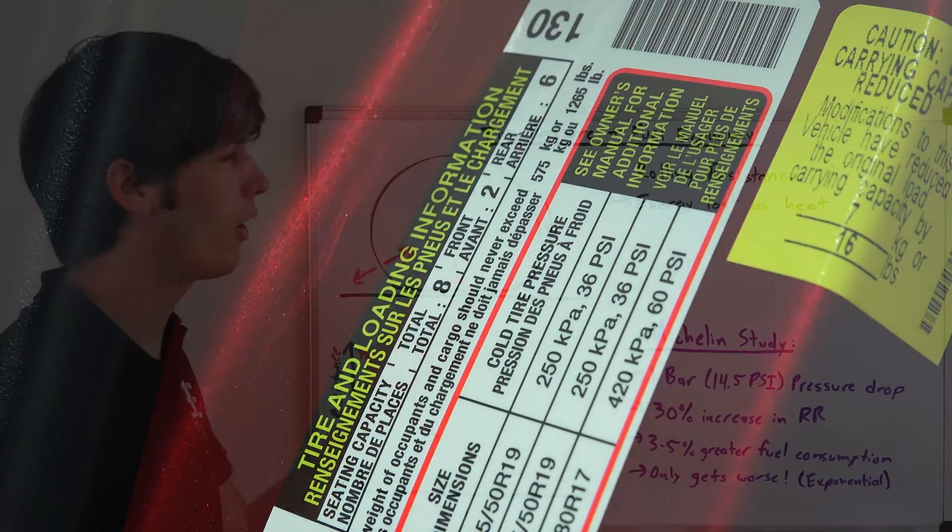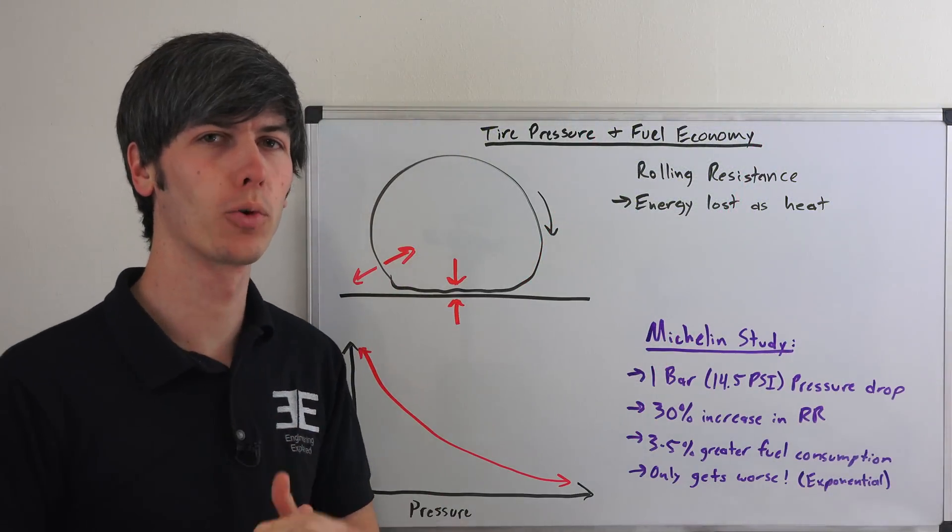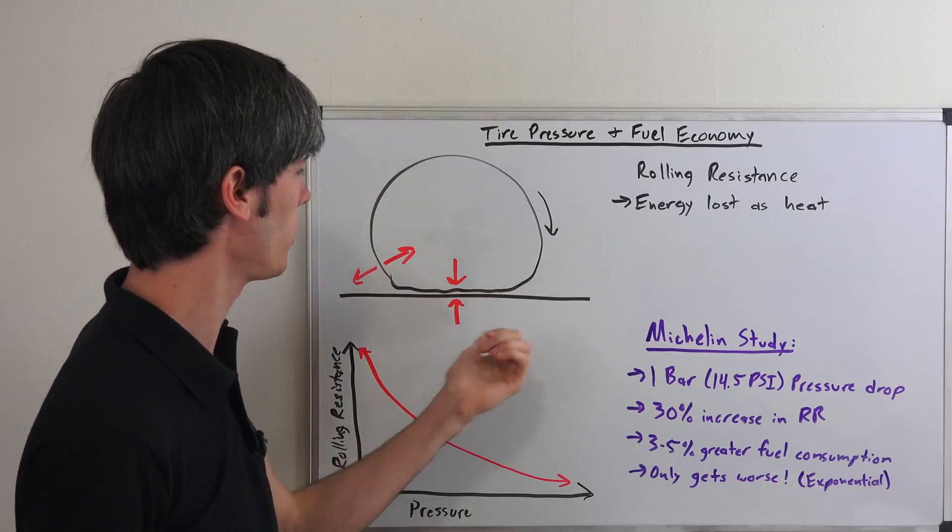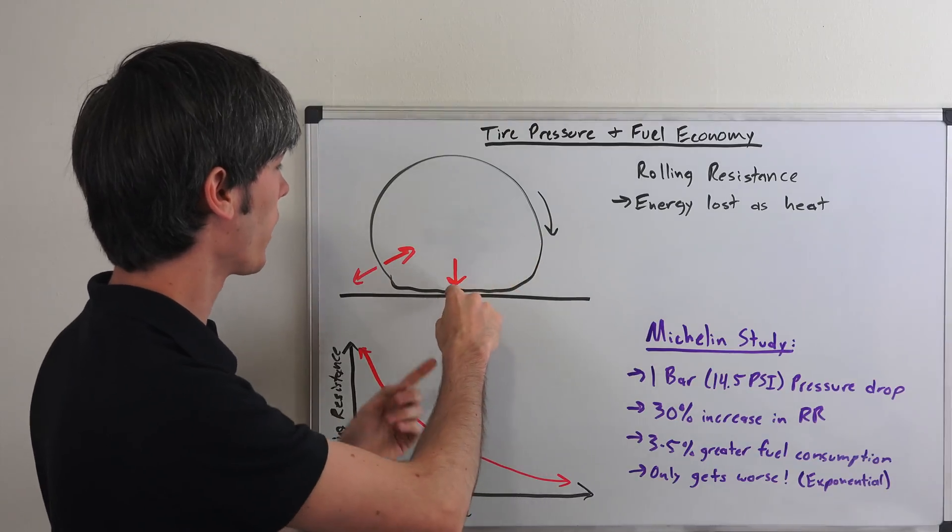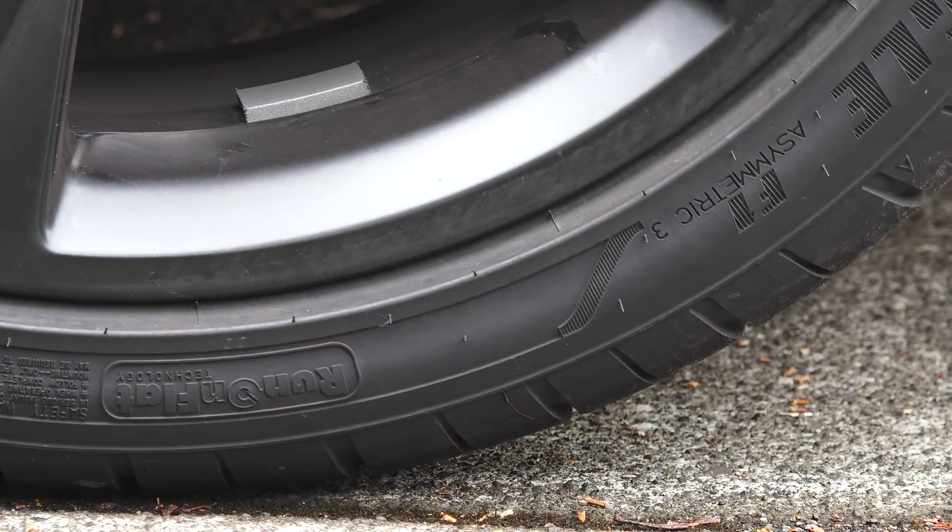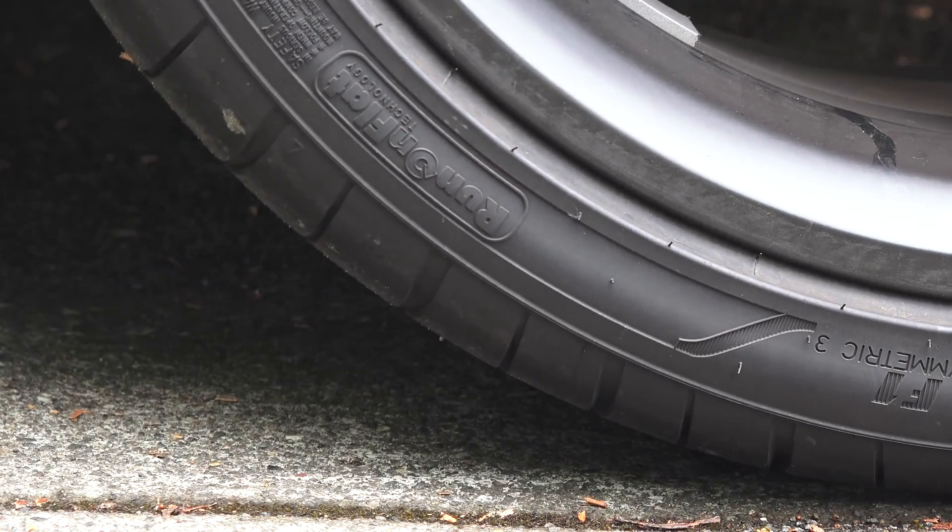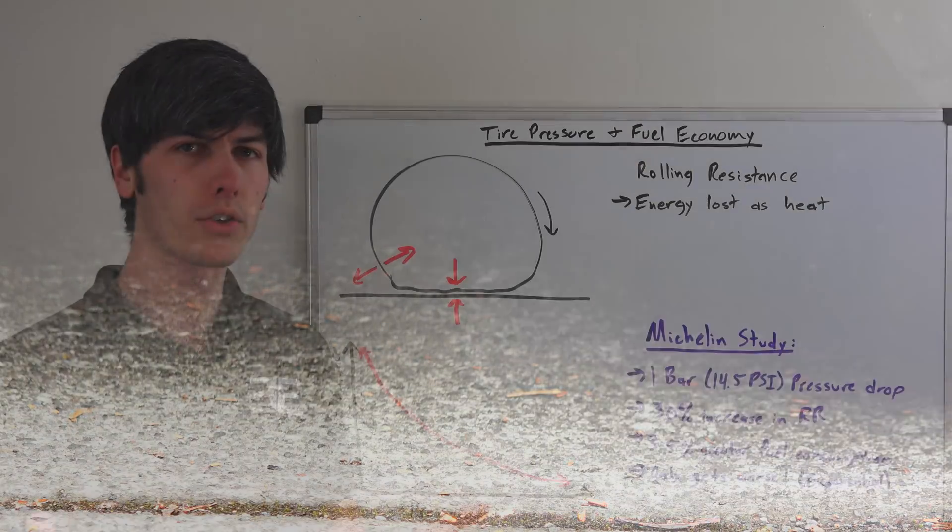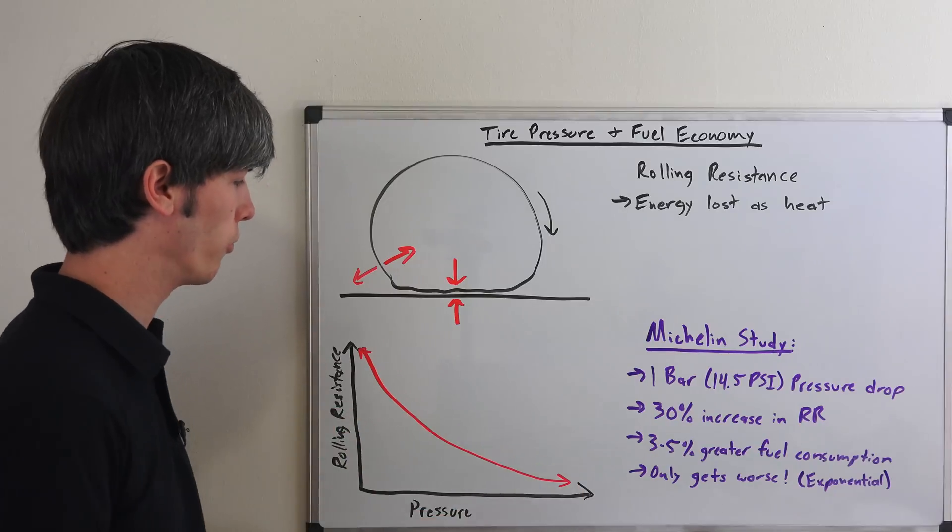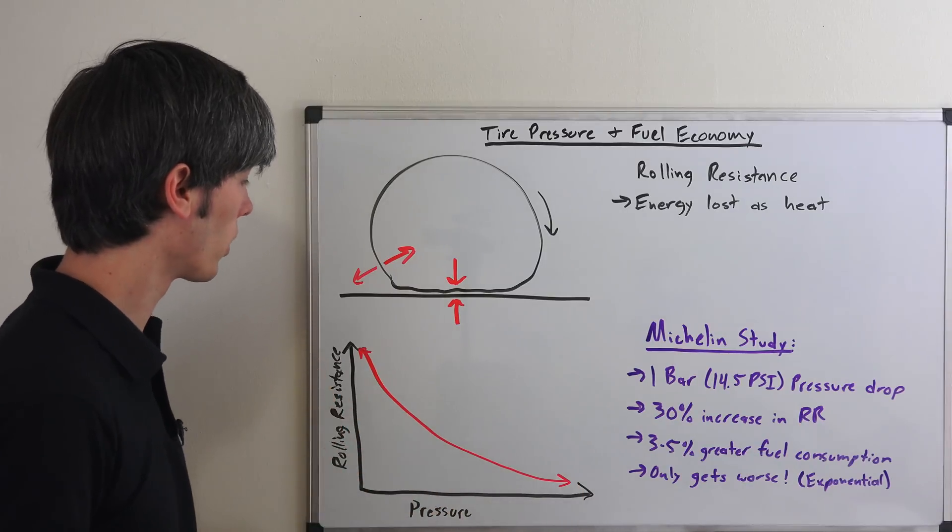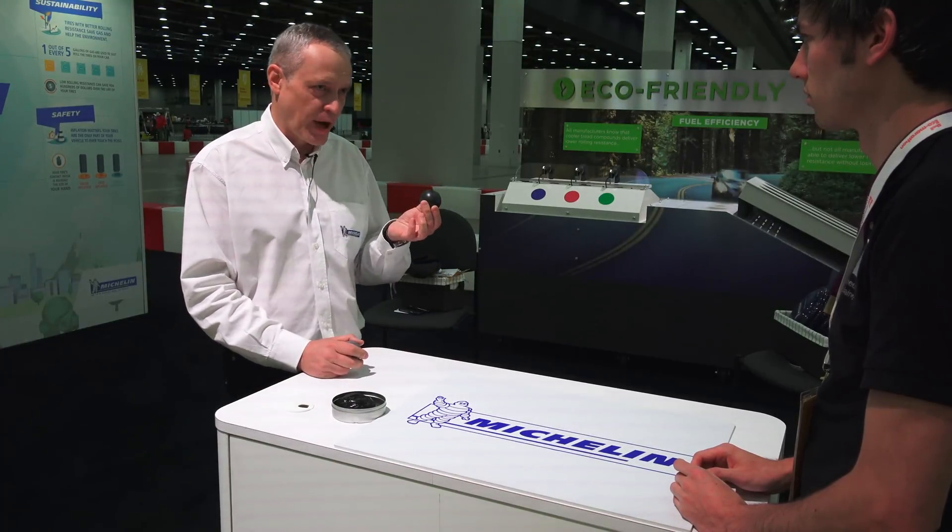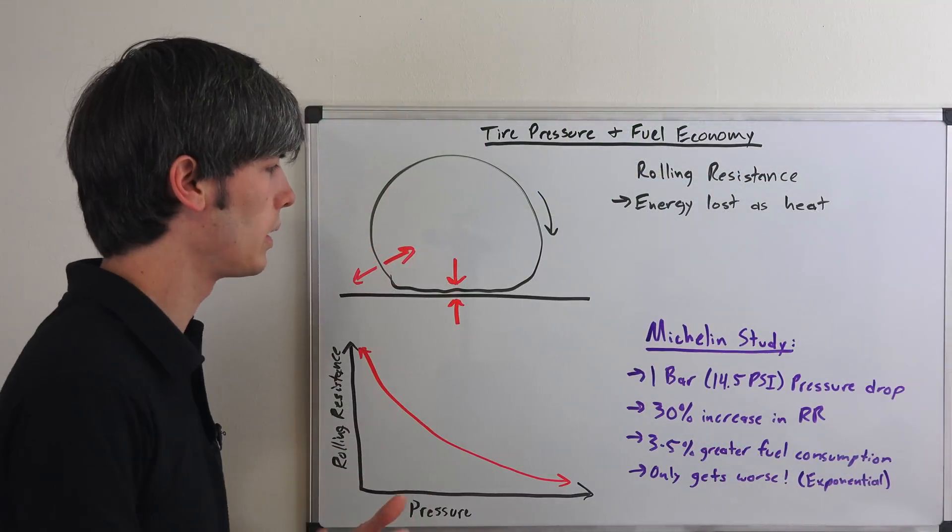Moving on to number three, how does tire pressure affect fuel economy? And, in order to understand that, we need to understand rolling resistance. So, rolling resistance is the energy lost as heat when a tire deforms. So, it's compressed, and then it stretches back out, and in that deformation, it loses some of that energy as heat. And so, that's rolling resistance, and that's going to be a force that your car has to overcome in order to drive. So, there's actually a very strong relationship between rolling resistance and the pressure in your tire, and it's actually an exponential function. So, as you decrease the amount of tire pressure, rolling resistance exponentially increases.